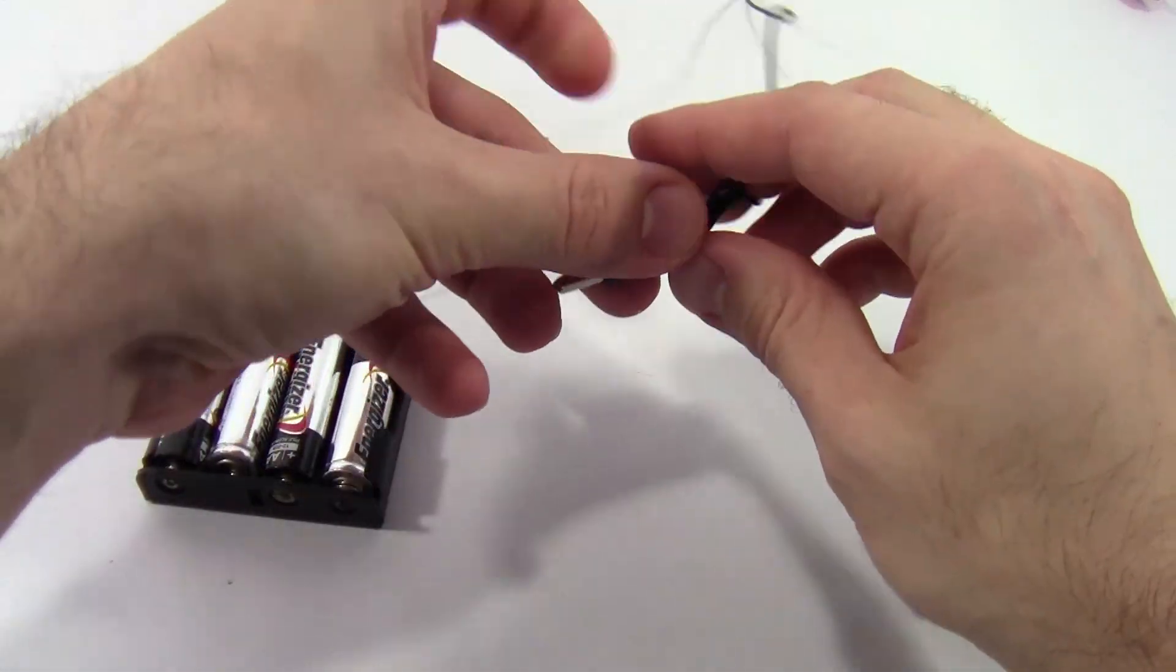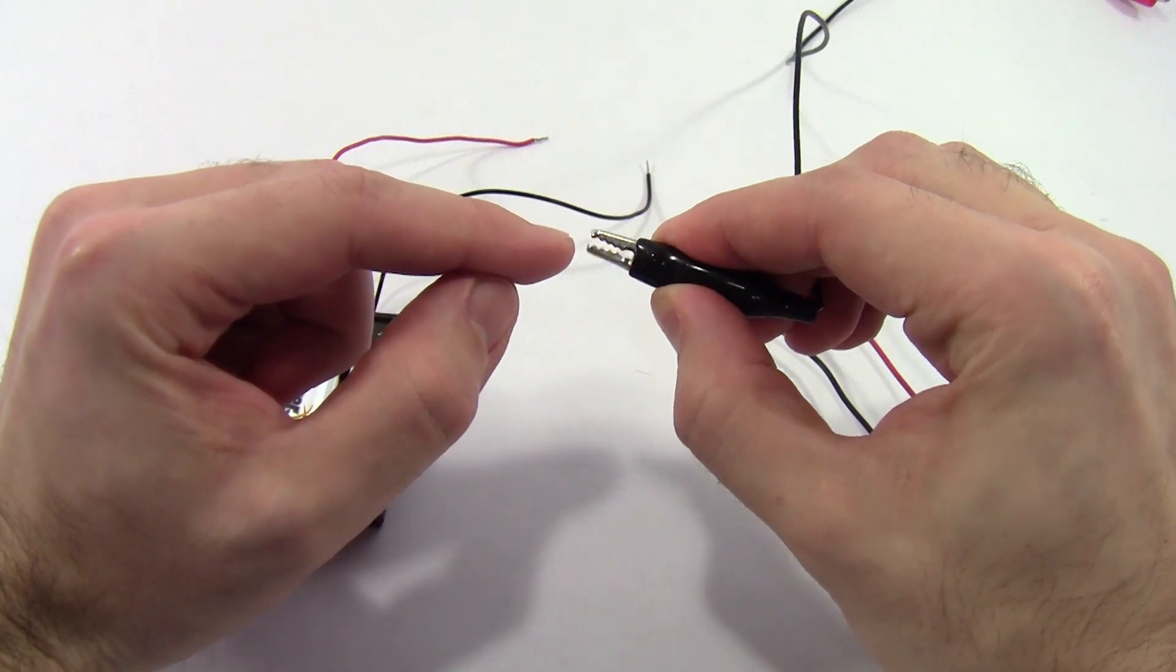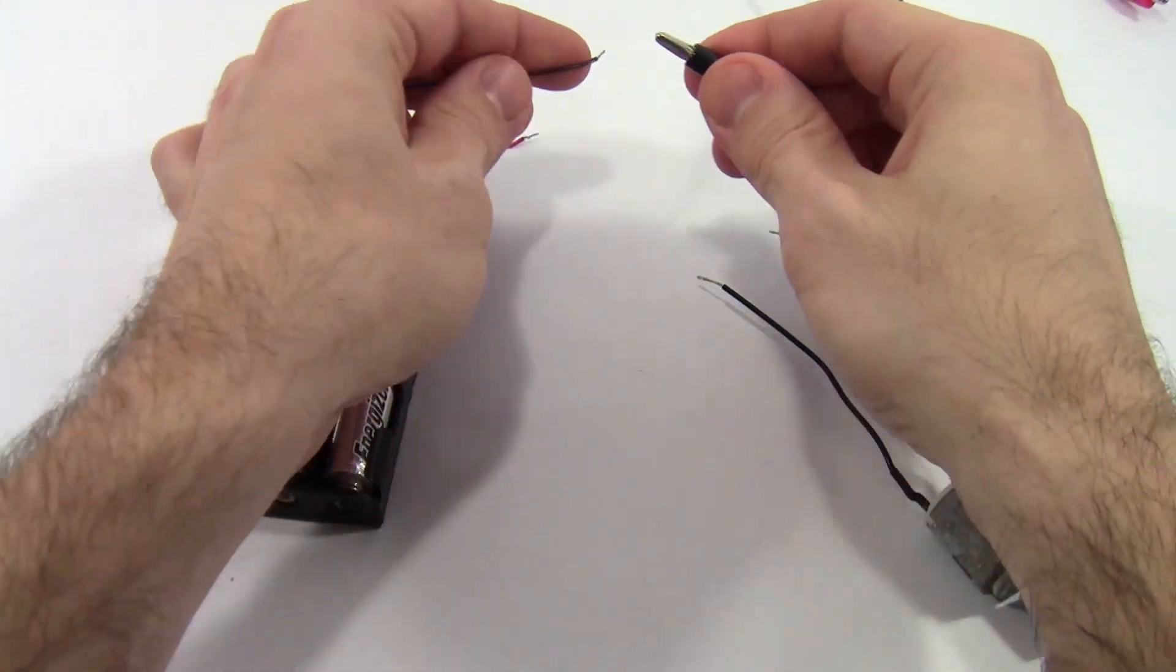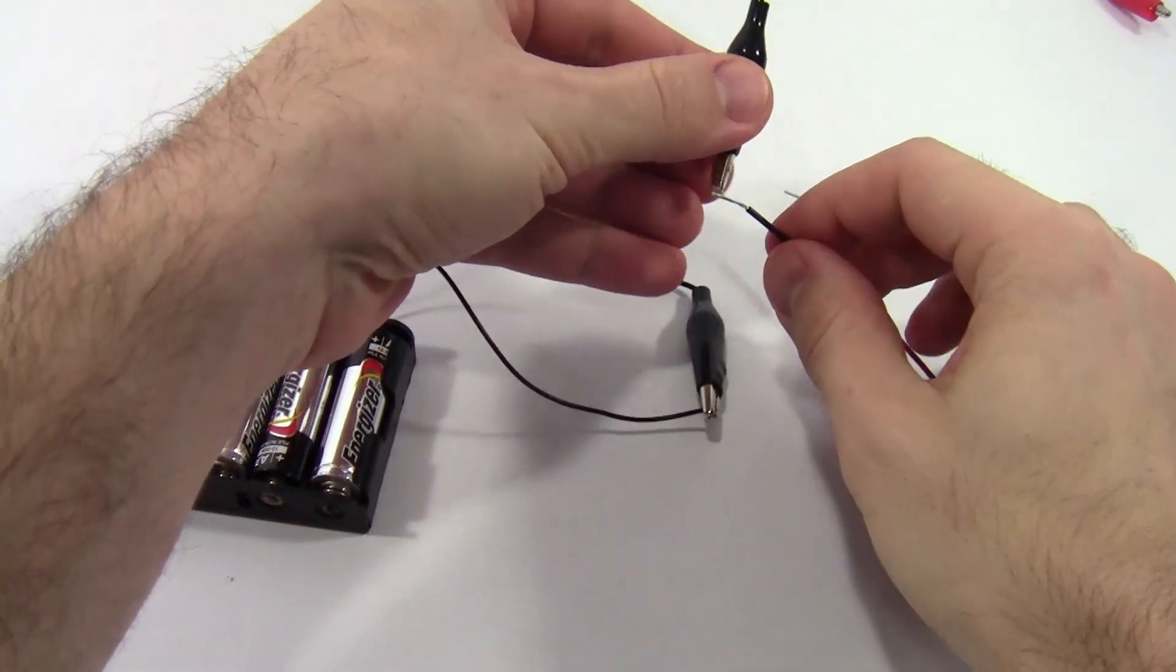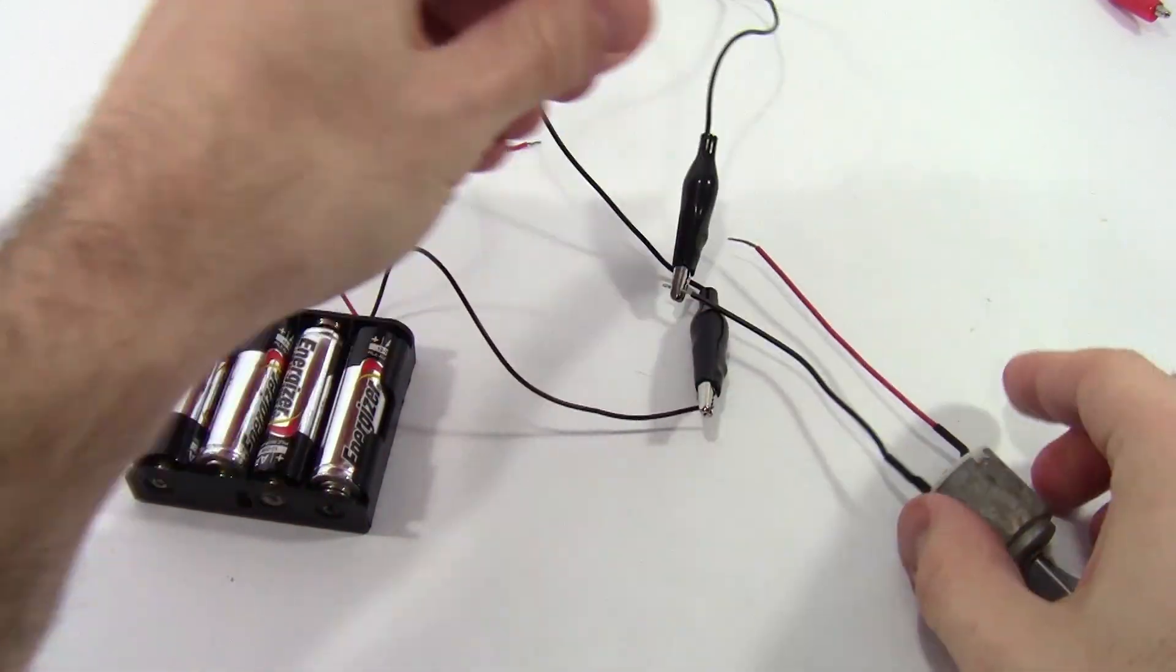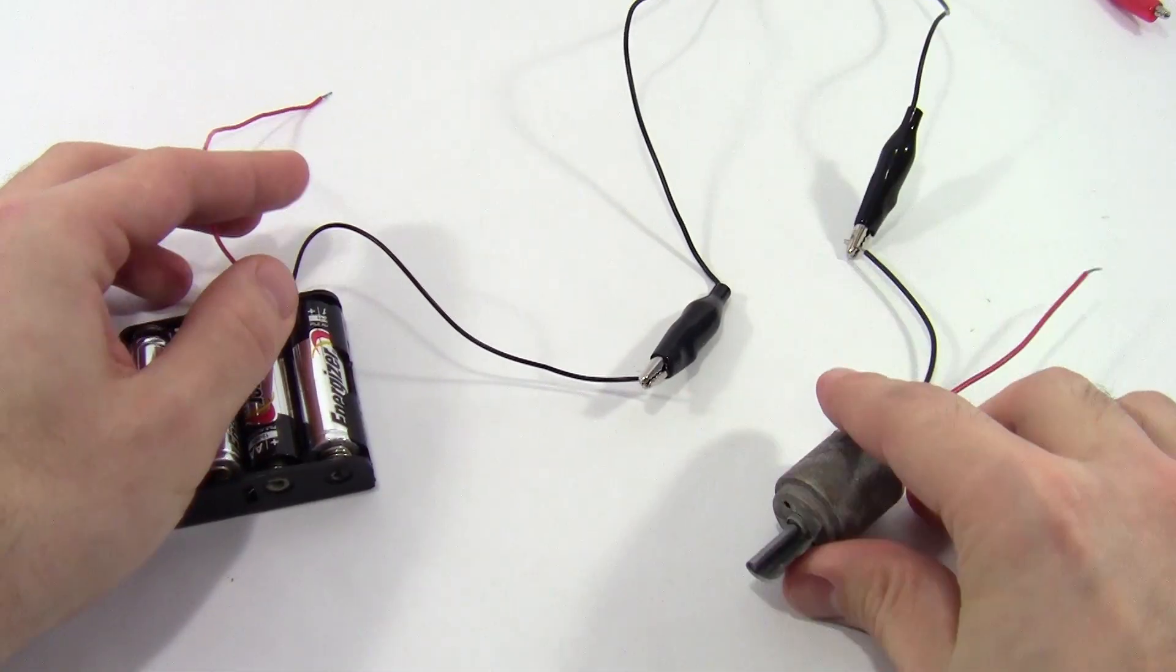Okay, so I can do that with alligator clips here, which are these handy little connectors that are called alligator clips because they have these little jaws with teeth on them that I can use to connect the two black wires. So there I have one set of wires connected, but I don't have a closed circuit, so nothing's spinning. There's no electricity flowing yet.